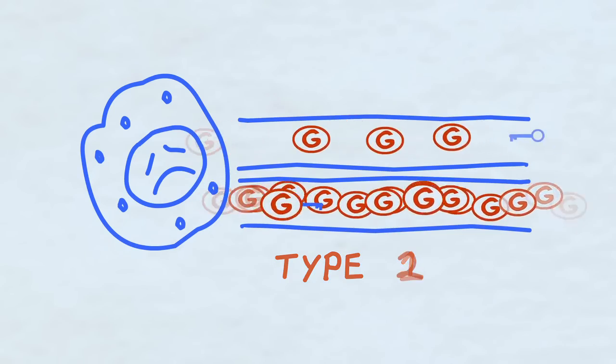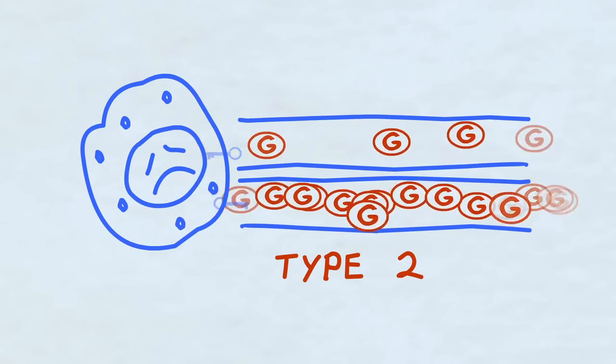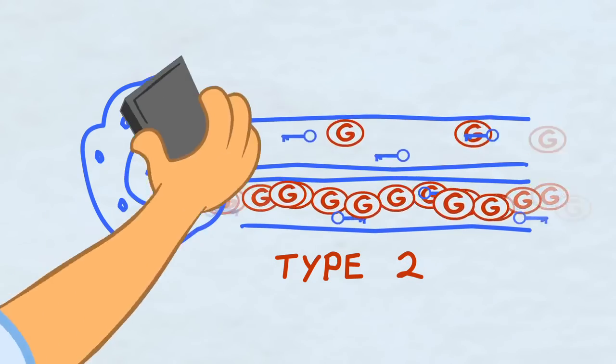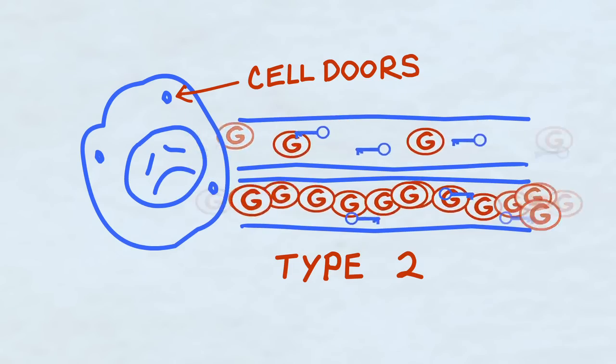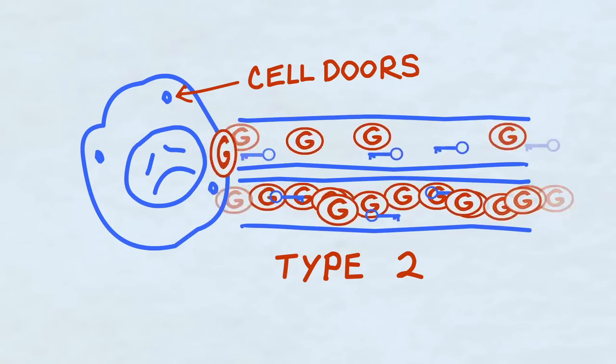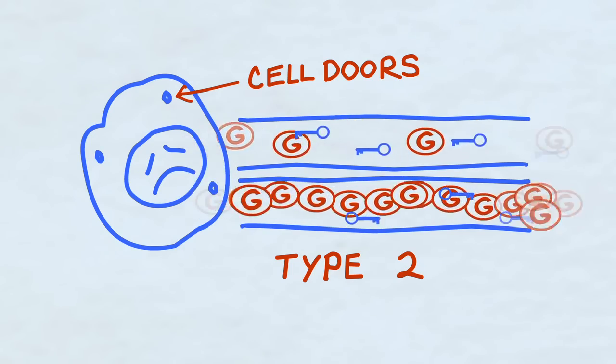But in type 2 diabetes, the problem is in the cells. There's enough insulin, but there aren't enough doorways. So, either way, the glucose builds up too much in the blood and causes lots of problems.